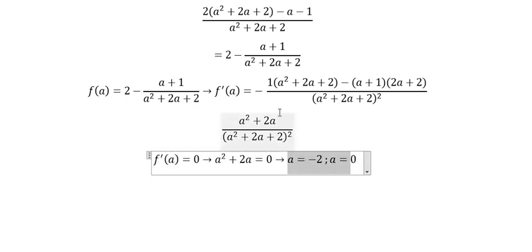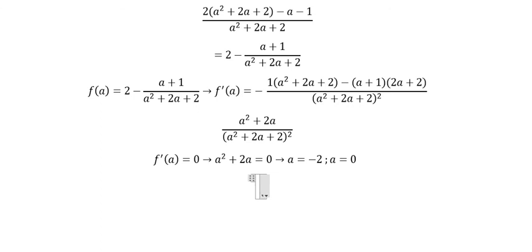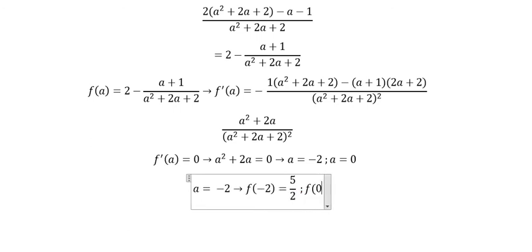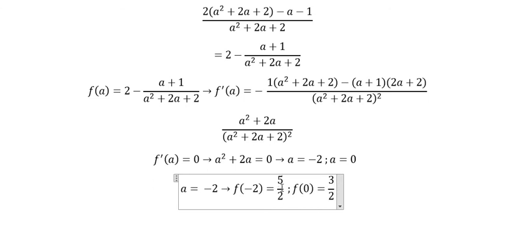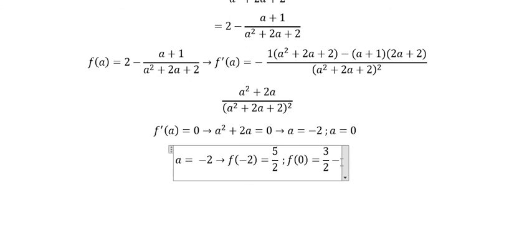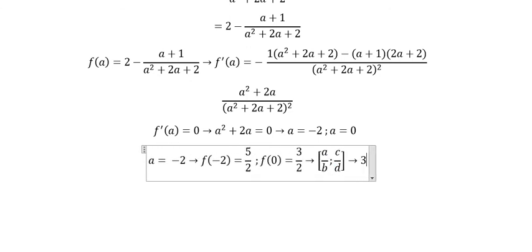We put these values back into f(a). If a = negative 2, we get f(negative 2) = 5/2. If a = 0, we put it in and get 3/2. We need to find these values because they give us the maximum and minimum, which lets us find the range. So the range is [3/2, 5/2].